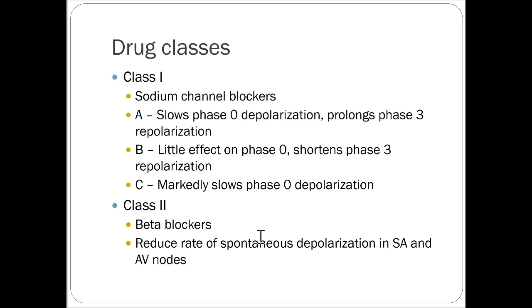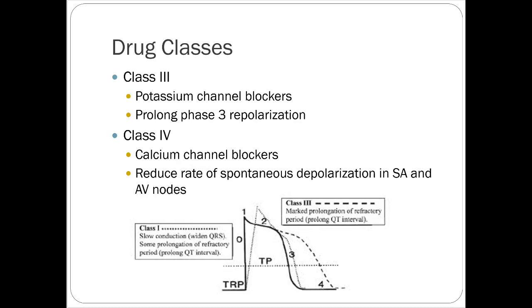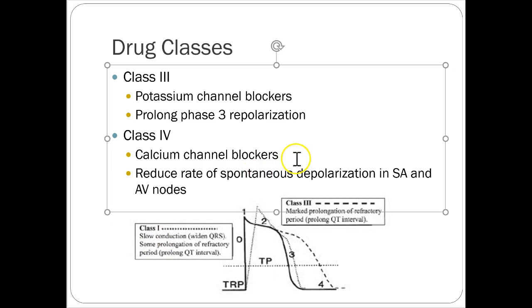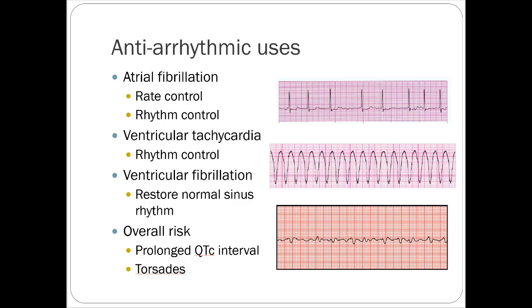Class 2 beta blockers are technically antiarrhythmic drugs — they decrease heart rate, but we use them for rate control rather than true antiarrhythmic purposes. Class 3 are potassium channel blockers that primarily prolong phase 3 repolarization, and they're our other major group of antiarrhythmic drugs. Class 4 are calcium channel blockers — specifically the non-dihydropyridine calcium channel blockers — which reduce the rate of spontaneous depolarization and provide rate control as well.